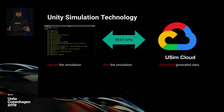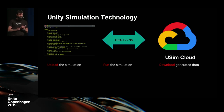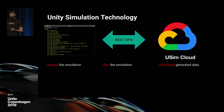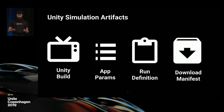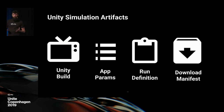What is the process of using Unity Simulation? First we need the simulation — we upload the simulation and any other relevant data needed to run it. We select what kind of hardware we want to run it on. We run the simulation, and in the end we can download the generated data. There are four main artifacts you should be aware of. First is the Unity build — that's the actual simulation running in the cloud.